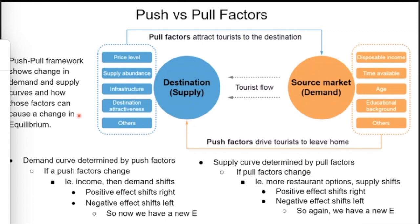Different factors affect supply and demand in hospitality economics through push and pull factors. Pull factors attract tourists to a destination — related to supply — such as price level, supply abundance, infrastructure, and destination attractiveness. The example from class is Dubai: when you improve your infrastructure and become more attractive, more people come. Push factors relate to the demand side — more disposable income, more time available, people coming of age to travel alone — pushing them out to travel. The example given was outbound tourism in China as more people gained disposable income.